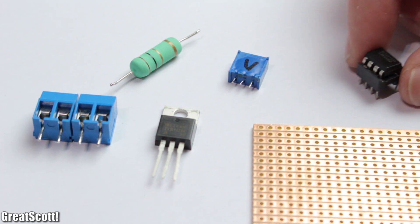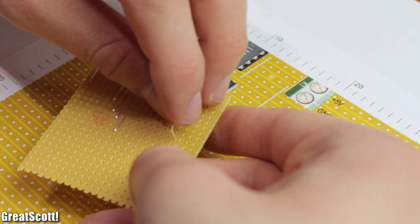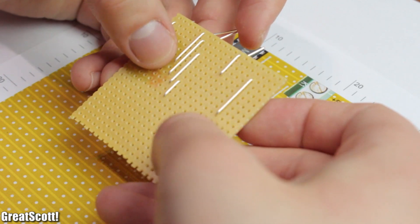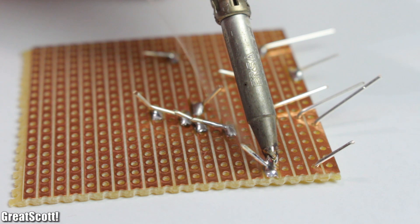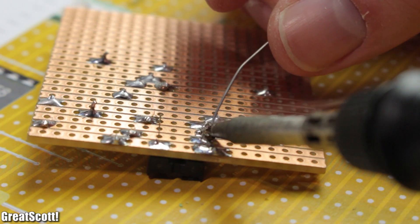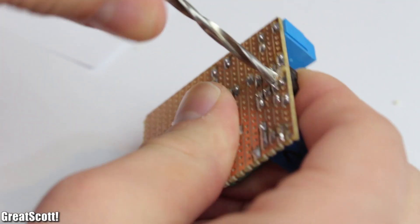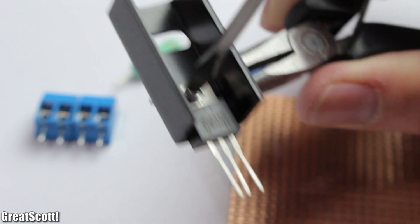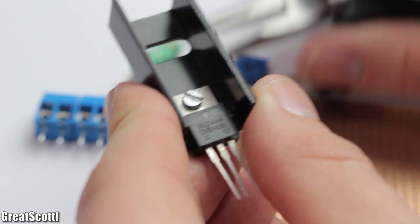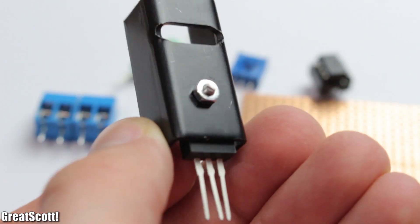The whole build only took me around 15 minutes. And if you want to build the same circuit, you can find the schematic, parts list, and the board design on Instructables. Link is in the description. And don't forget to put a heatsink on the MOSFET, because this guy will get really hot.